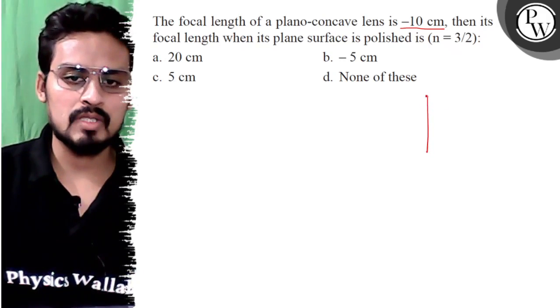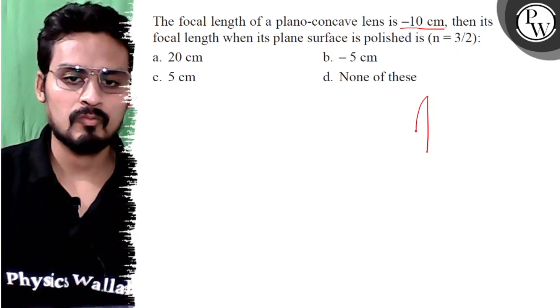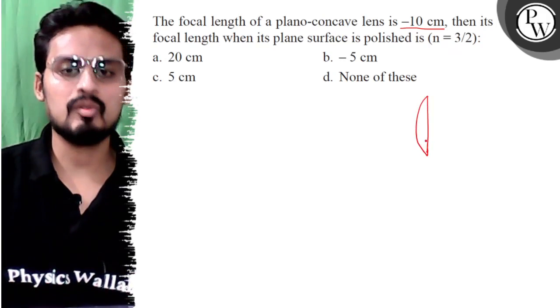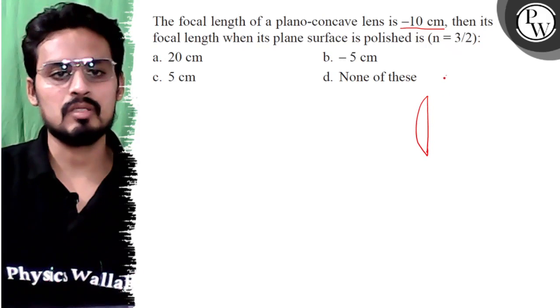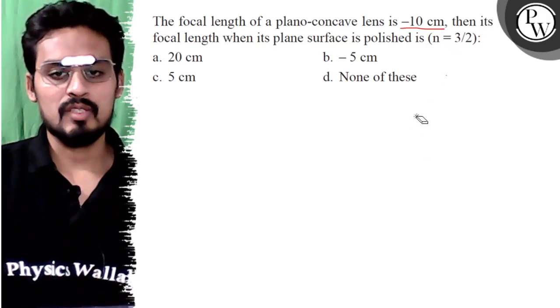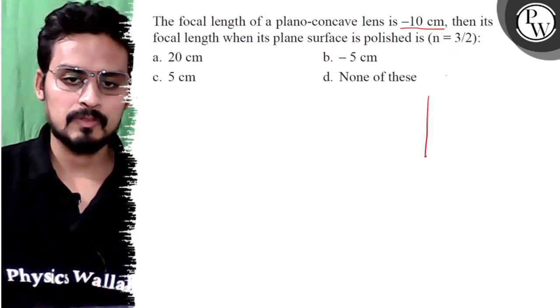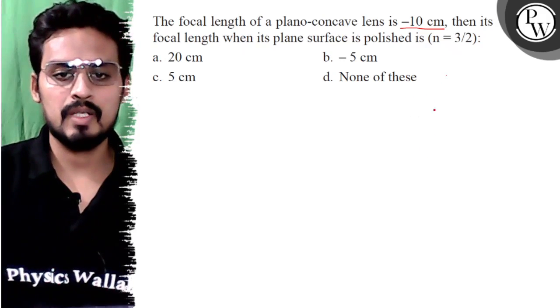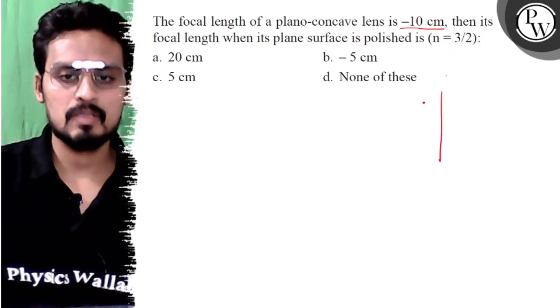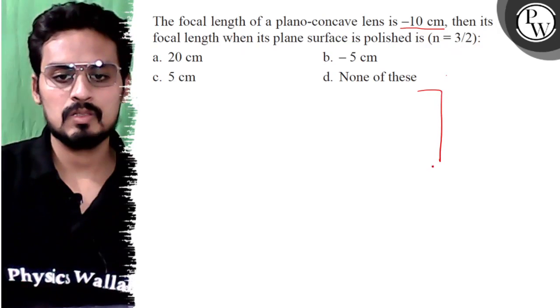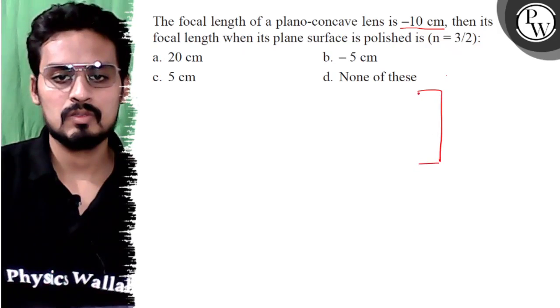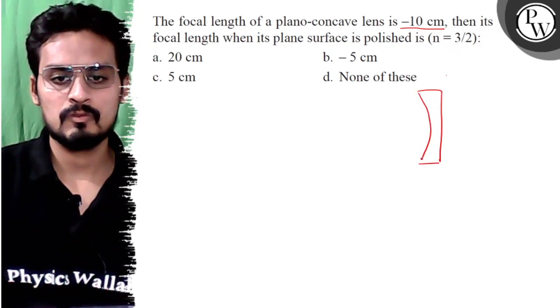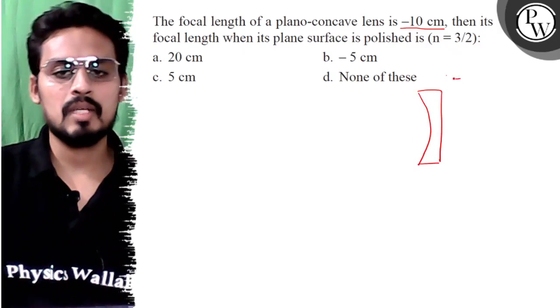So what have we said? That there is a plano-convex lens. It has a focal length of minus 10 cm. It is a plano-concave lens. There is a plano-concave lens and this focal length is minus 10 cm.